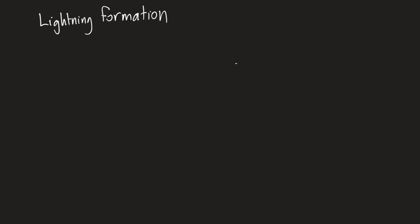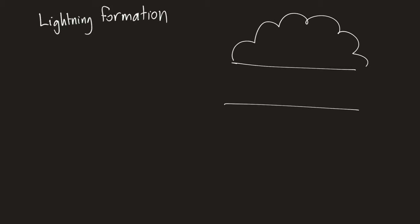Lightning occurs when there's a charge separation between two regions. For example, we might have a charge separation between a cloud and the ground. The bottom of the cloud might be negative and the ground positive. Lightning is a discharge of that charge separation, where the electrons jump from the cloud to the ground to neutralize that charge separation.